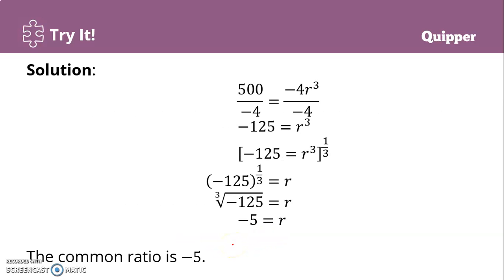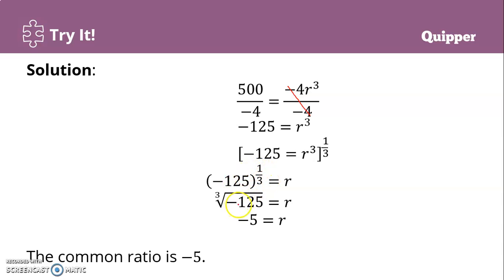Dividing both sides by negative 4 gives us negative 125 equals r cubed. To solve for r, we take the cube root of negative 125 — that is, we raise it to the exponent 1 over 3. You can solve this using your calculator by using the cube root function.